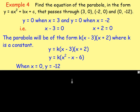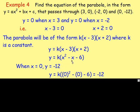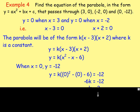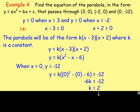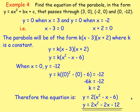Using the third point (0, −12), substitute x equals zero and y equals negative 12: negative 12 equals k times (0 squared minus 0 minus 6), which gives negative 12 equals negative 6k, so k equals 2. Therefore the equation is y equals 2 times (x squared minus x minus 6), which multiplies out to y equals 2x squared minus 2x minus 12. That is the equation of the parabola.